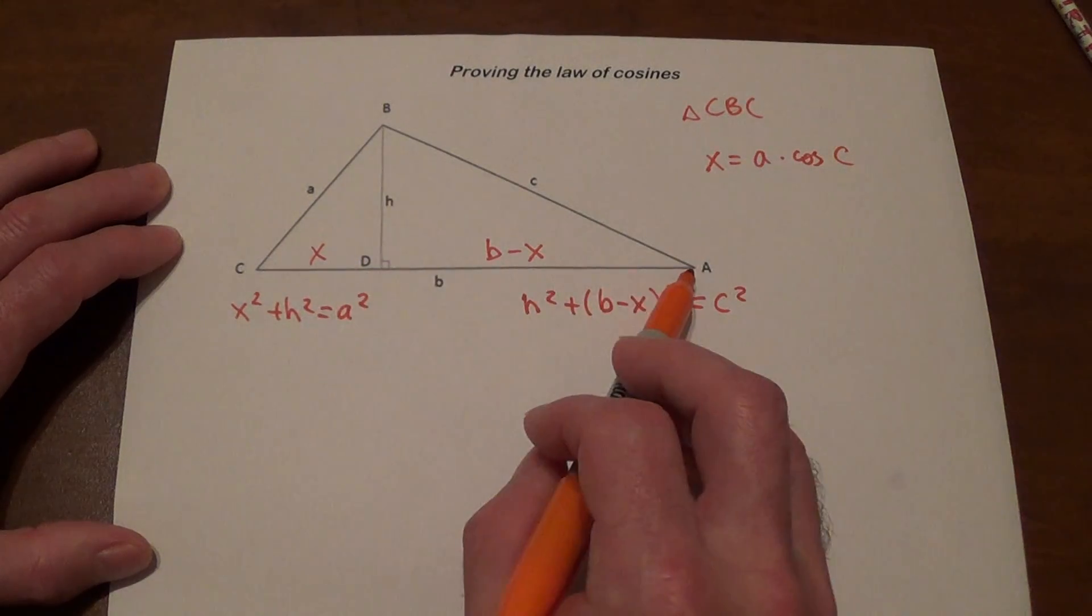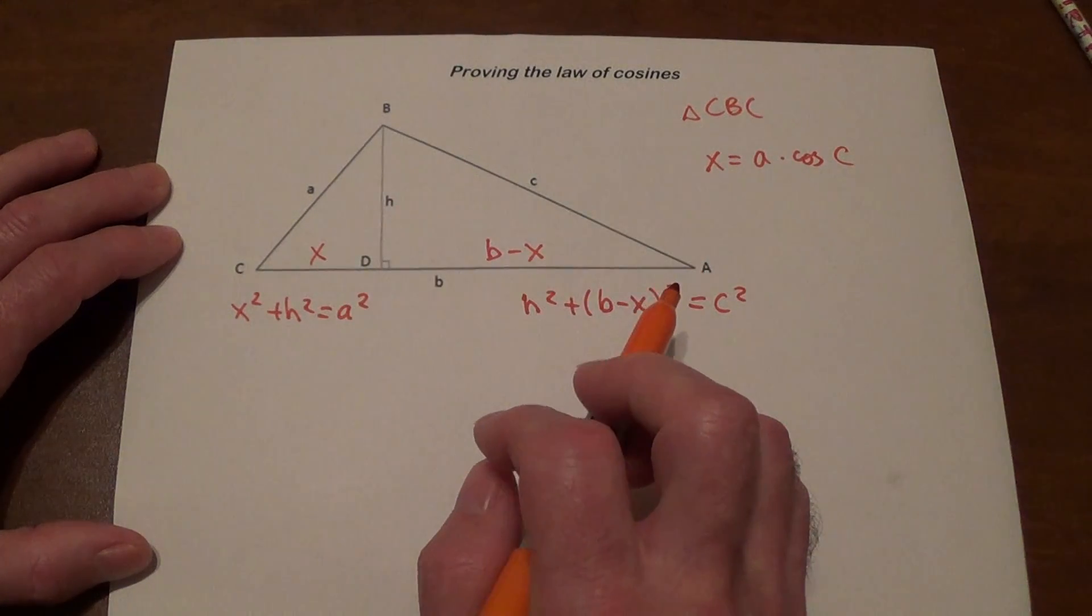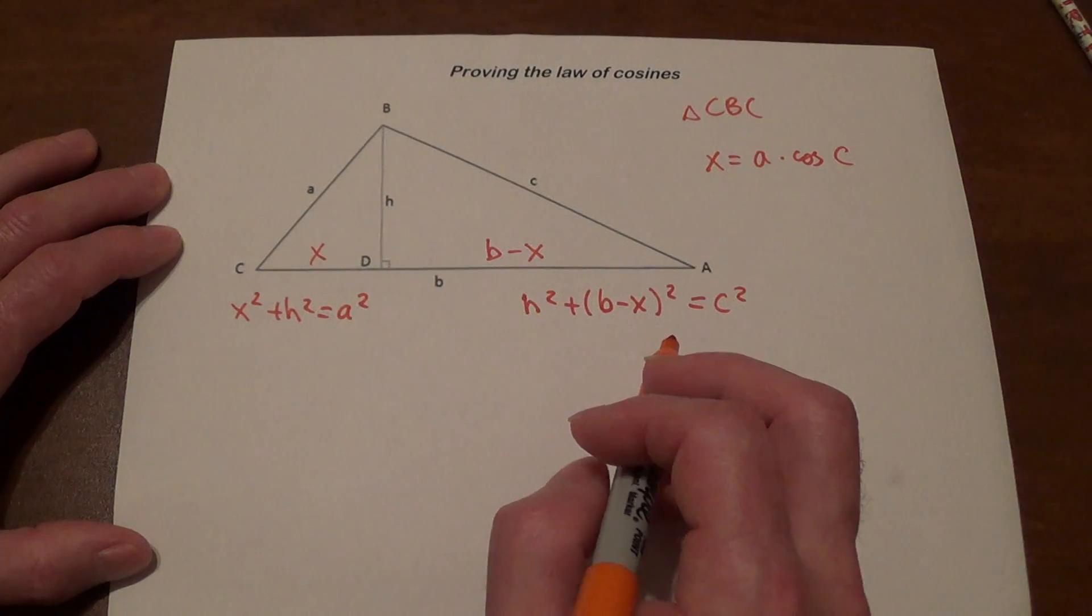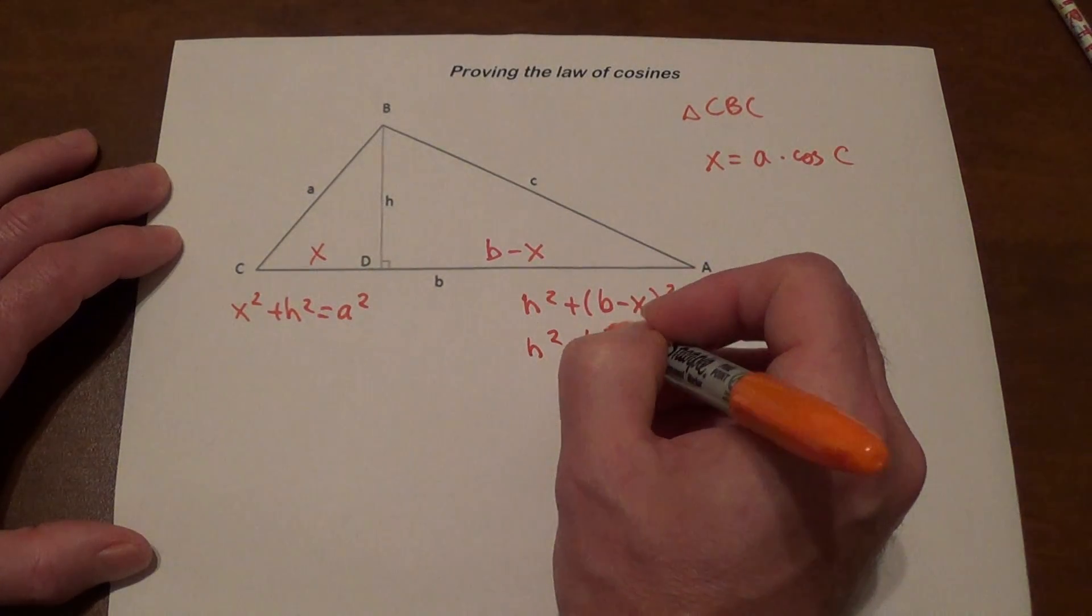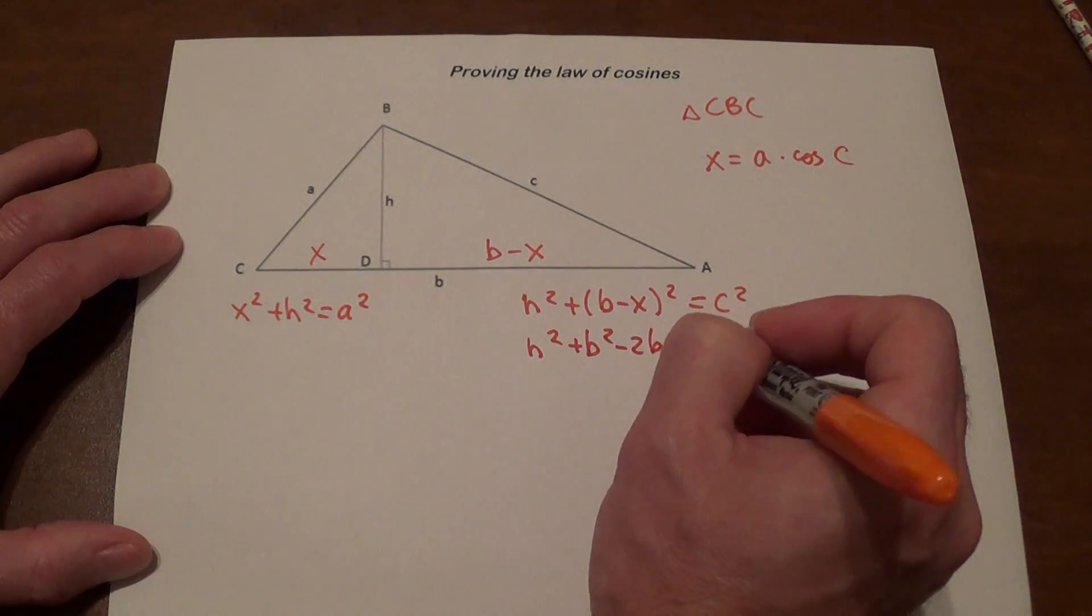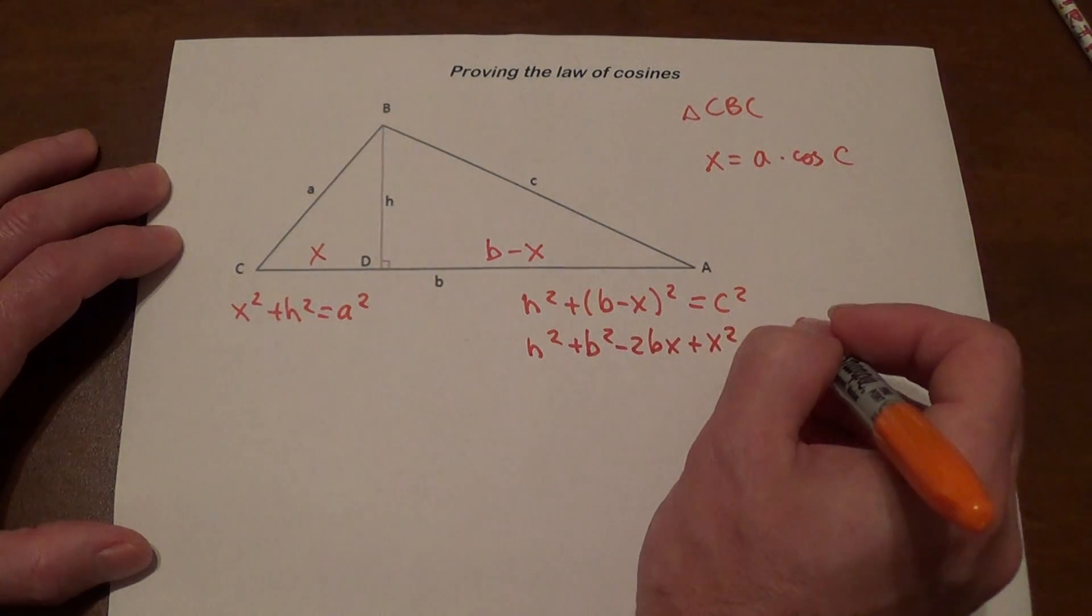Here's what we're going to do. We're going to write this as h squared plus b squared minus 2bx plus x squared equals c squared.